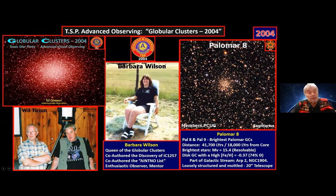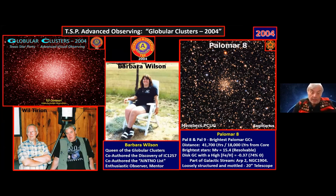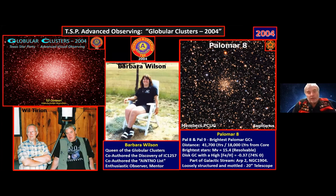In 2004, the theme was globular clusters. We had Wil Tirion of star chart fame. I want to say a few things about my friend Barbara Wilson, who unfortunately passed away a couple of years ago unexpectedly. Barbara was a queen of globular clusters — she had seen nearly all globular clusters in the northern hemisphere. If you search for a globular cluster online, chances are you'll see an observation by B. Wilson. She loved these things and was very good at observing them. She was my favorite observing partner for many years — her love of the sky was infectious. She co-authored a discovery paper on IC 1257, a globular cluster.